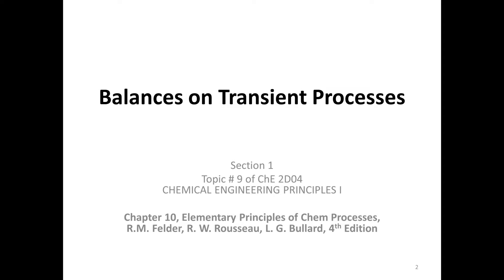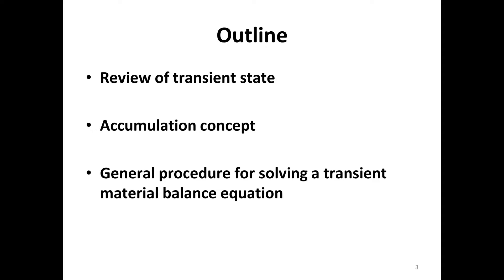Today we are going to learn about transient processes. We have learned a little in Chapter 4 of our reference book, Elementary Principles of Chemical Processes, but today we are in Chapter 10. We are going to review the transient state and the accumulation concept, and then learn the general procedure for solving a transient material balance equation. Everything we have learned so far was about steady state.